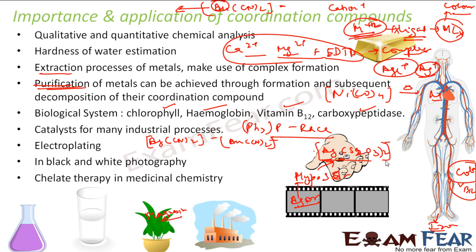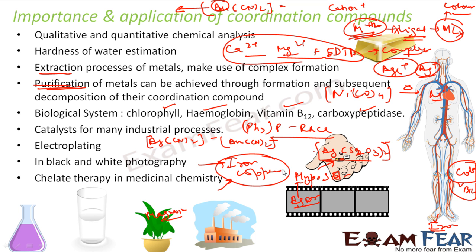Coordination compounds are used in medicine. Chelate coordination complexes are used for treating many diseases. For example, if the body has excess iron or copper — from whatever environmental source — a good option is to use a coordination compound. A suitable ligand that does not harm the body will form a complex with the iron or copper and remove it. This is similar to how we remove calcium and magnesium from water — we use chelating agents to remove excess metals from blood.